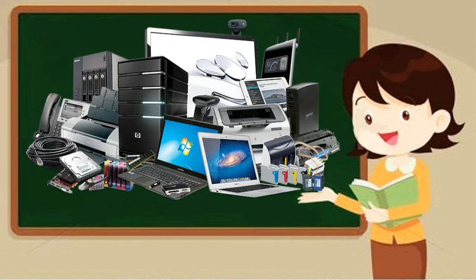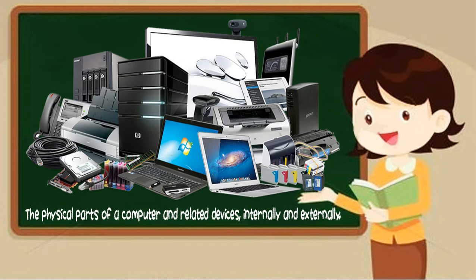This picture shows the examples of computer hardware. What is computer hardware? It is the physical parts of a computer and related devices, internally and externally. When we say internally, these are the parts that are inside the computer. When we say externally, these are the parts that we can see outside and are connected with your computer.